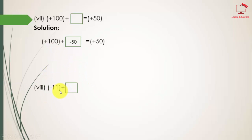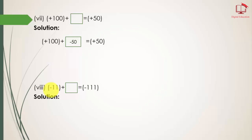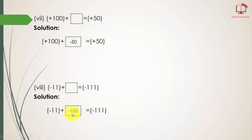Part number 8: here we have minus 11, and we need to find what to add to get the answer minus 11. Suppose if I put positive 100, then the answer would be 89, which is not correct. So here I am putting minus 100. Minus and minus gives positive, and we write the negative sign because 100 is the greater integer value. So the answer is minus 111.